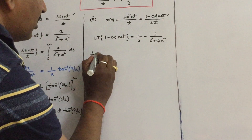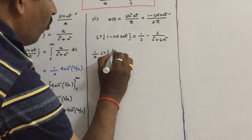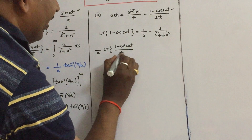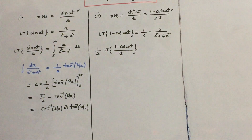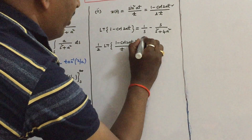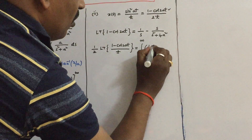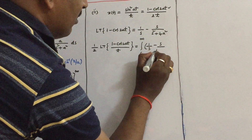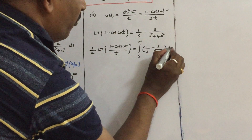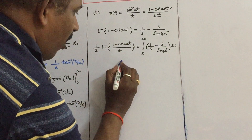Since 1/2 is a constant factor, take it outside. We need the Laplace transform of (1 minus cos(2At)) by T, so on the right side we have the integral from S to infinity of [1/S minus S/(S² + 4A²)] dS. Use the formula: integral of dx/x equals log x, and the formula integral of f'(x)/f(x) dx equals log|f(x)|.